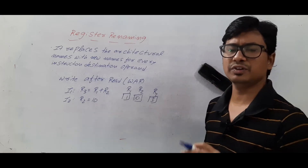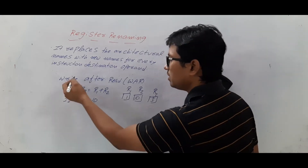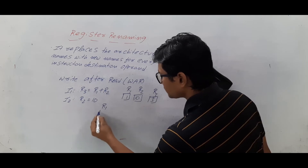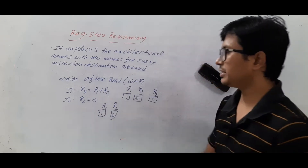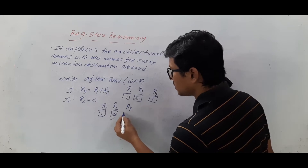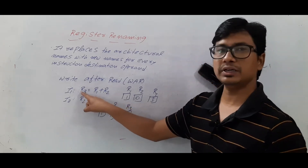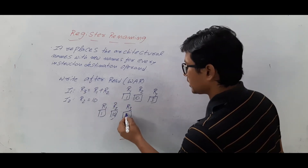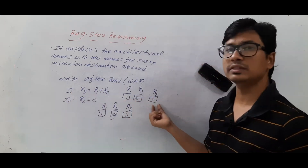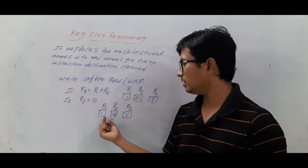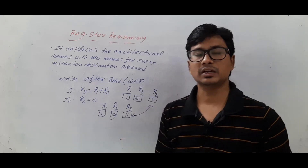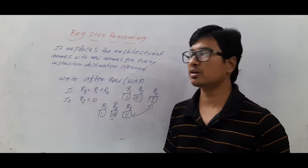However, if due to instruction reshuffling instruction 2 executes first, r2 gets updated to 10. Then when instruction 1 executes, r3 = r1 + r2 = 1 + 10 = 11. So executing instruction 1 then 2 gives r3=3, but executing instruction 2 then 1 gives r3=11. This data inconsistency is called a write after read hazard.